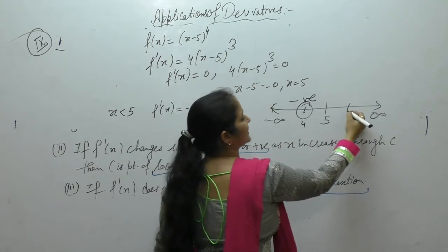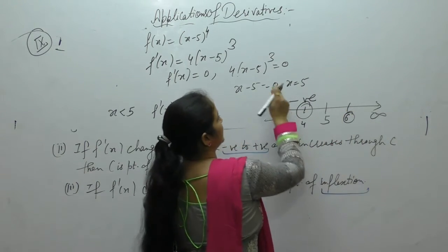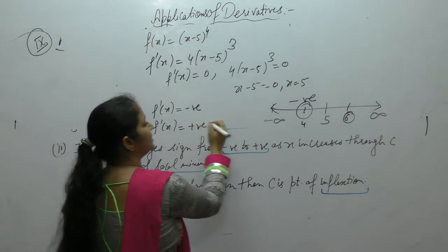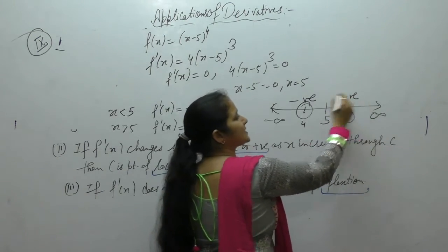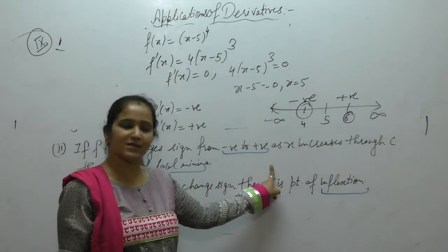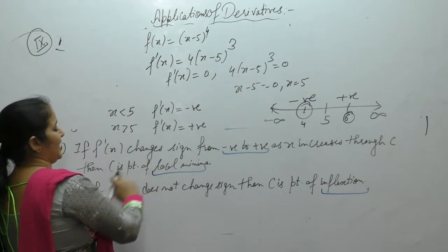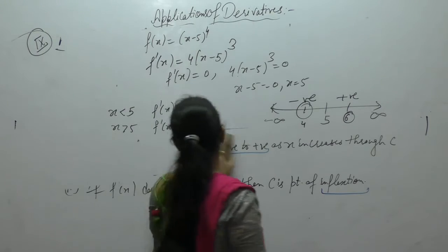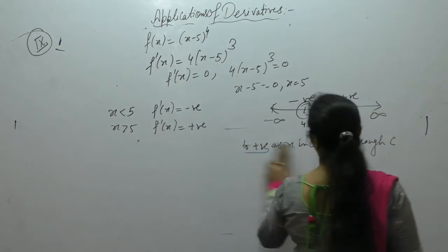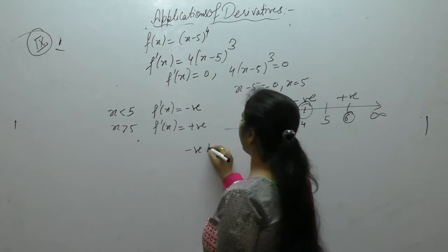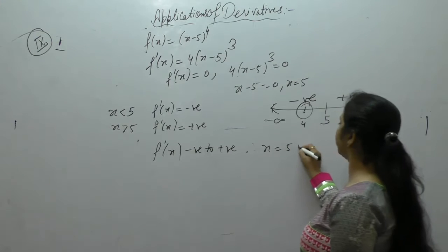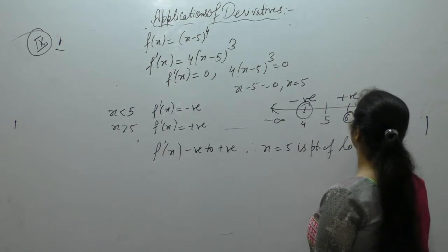Now for x greater than 5, let us take x = 6. So 6 - 5 = 1, 1 cubed = positive. So f'(x) changes sign from negative to positive. Therefore x = 5 is a point of local minima.